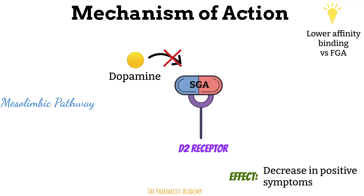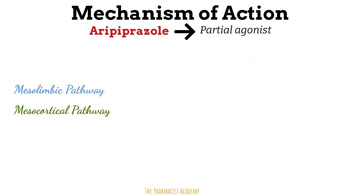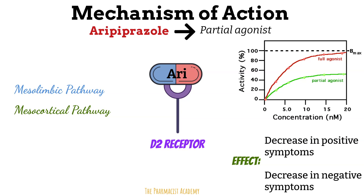Note that second generation antipsychotics have a lower affinity for the D2 receptors compared to the first generation antipsychotics, which may reduce the risk of motor side effects like extrapyramidal symptoms, or EPS — we will discuss more about that later. Second generation antipsychotics like aripiprazole act as partial agonists at the D2 receptor in the mesolimbic and mesocortical pathway. A partial agonist activates a receptor but does not produce the maximum response — the effect is not as strong as a full agonist even when it binds to all available receptors. This means it modulates dopamine activity rather than just blocking it: it can block dopamine when levels are too high, reducing positive symptoms, and stimulate the receptor when dopamine levels are too low, potentially improving negative symptoms.